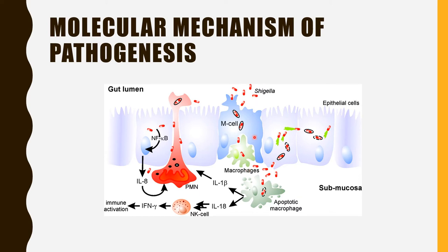When the bacterium gains entry into the submucosal part, the macrophages will ingest them. But the Shigella bacillus has the capability to resist macrophages. The Shigella bacillus will cause apoptosis of the macrophages, leading to the release of interleukin-1-beta and interleukin-18. This leads to NK cell activation, and the NK cells will release interferon-gamma, causing immune activation.